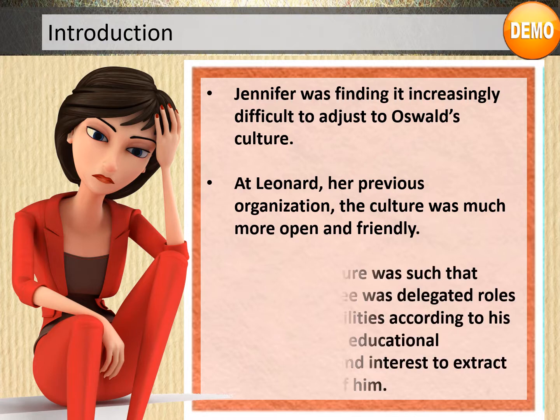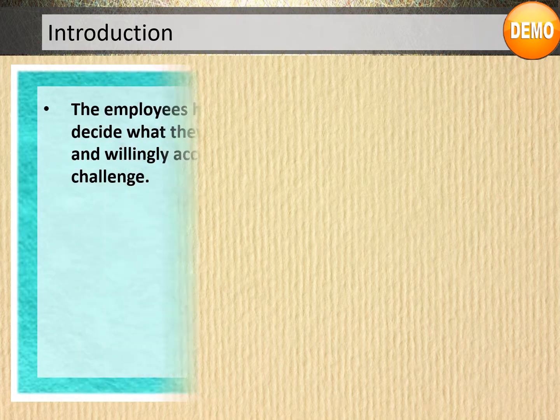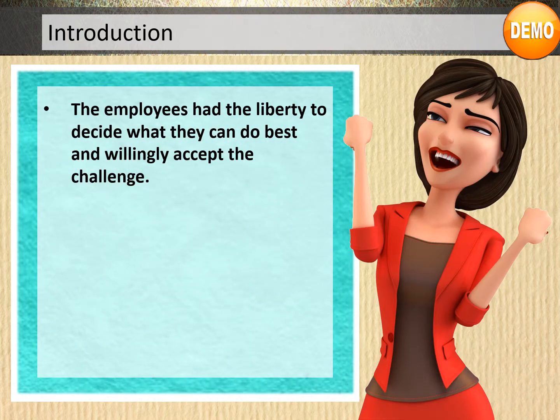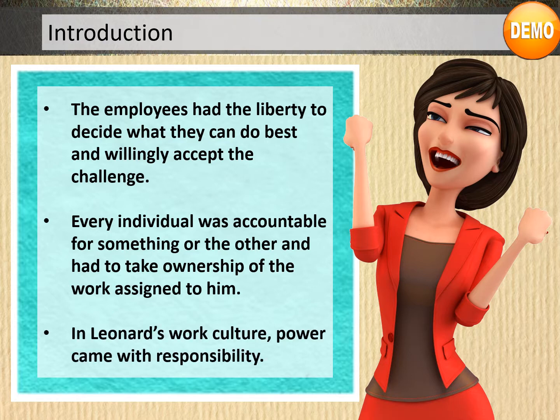At Leonard, her previous organization, the culture was much more open and friendly. Leonard's culture was such that every employee was delegated roles and responsibilities according to their specialization, educational qualification, and interest, to extract the best out of them. The employees had the liberty to decide what they could do best and willingly accept the challenge. Every individual was accountable for something and had to take ownership of their work. At Leonard, power came with responsibility.